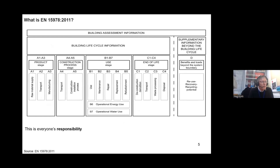The framework for EN 15978 consists of a diagram which covers five key elements of the building life cycle — from A1 through A5, from B1 to B7, C1 to C4, and the off section D, which is less referred to but is fundamental to EU levels. Section D is about the area beyond the building life cycle for reuse, recovery, and recycling potential.